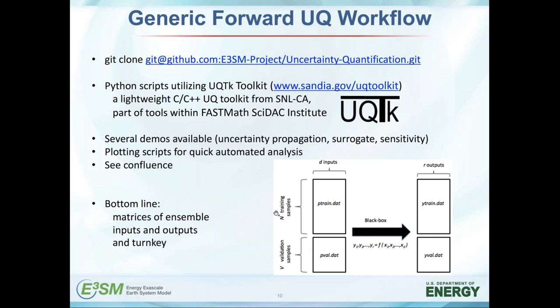We have a generic forward uncertainty propagation workflow that's implemented and is supposed to be turnkey. If you have a matrix of inputs and a matrix of outputs from your black box model, this is an automated machinery to help figure out the uncertainty contributions. For a very accurate surrogate you often need a lot of ensemble members, but there are methods — implemented in this workflow — that can build surrogates even with very few ensemble points. The price is that the surrogate won't be very accurate, but that inaccuracy is also well-quantified within this methodology. It can deal with any number of samples — the more the merrier, of course.